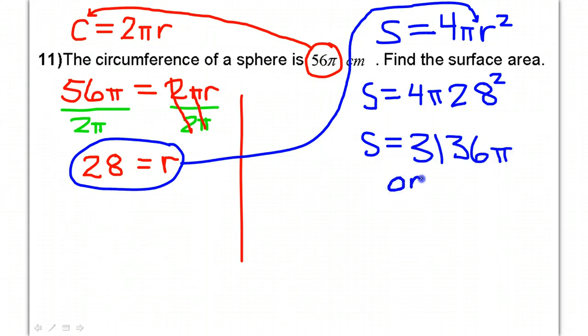Which gives me 3,136π, or as a decimal, that would be 9,852.03.